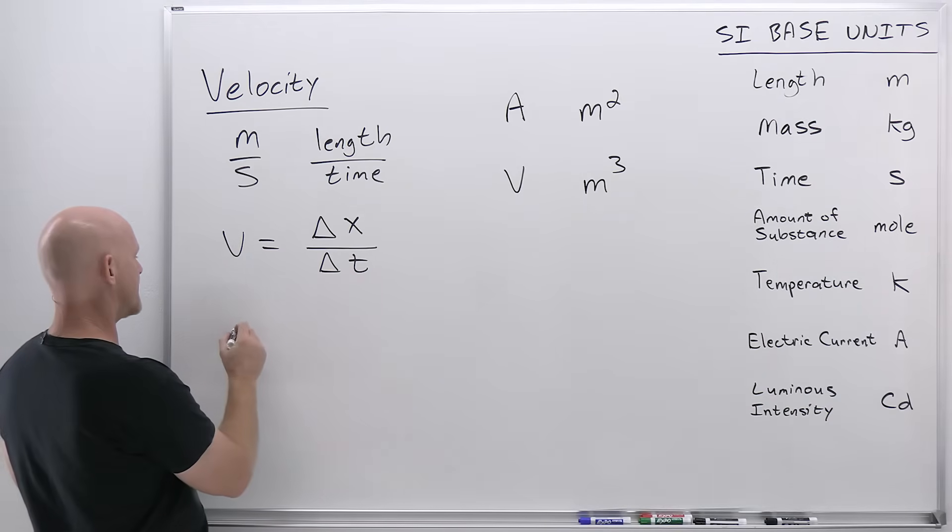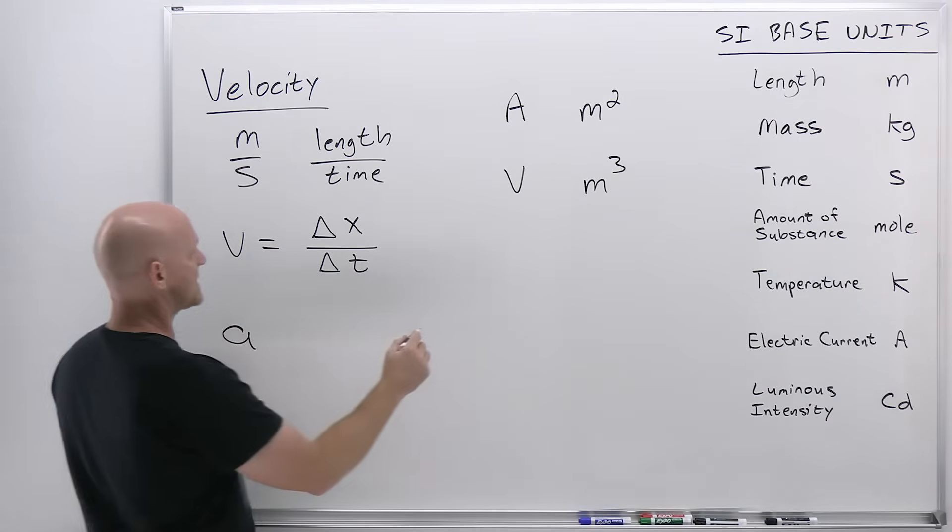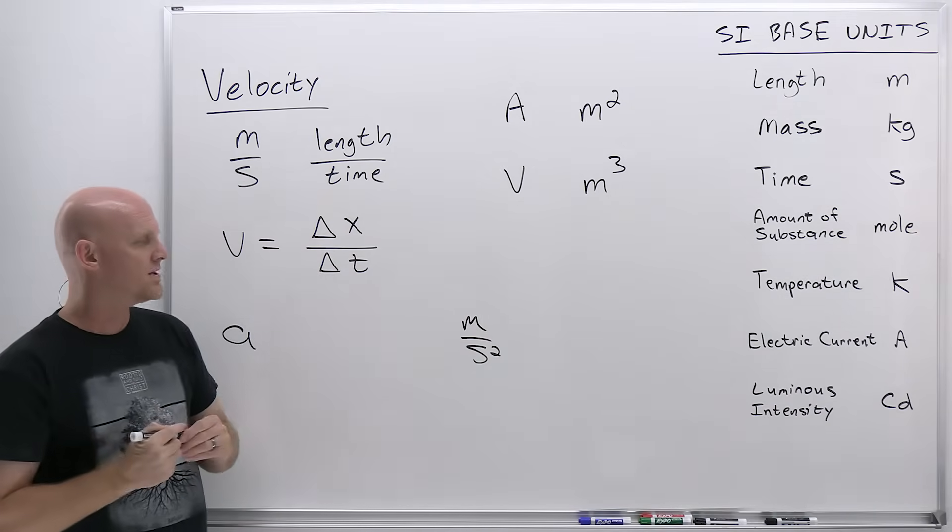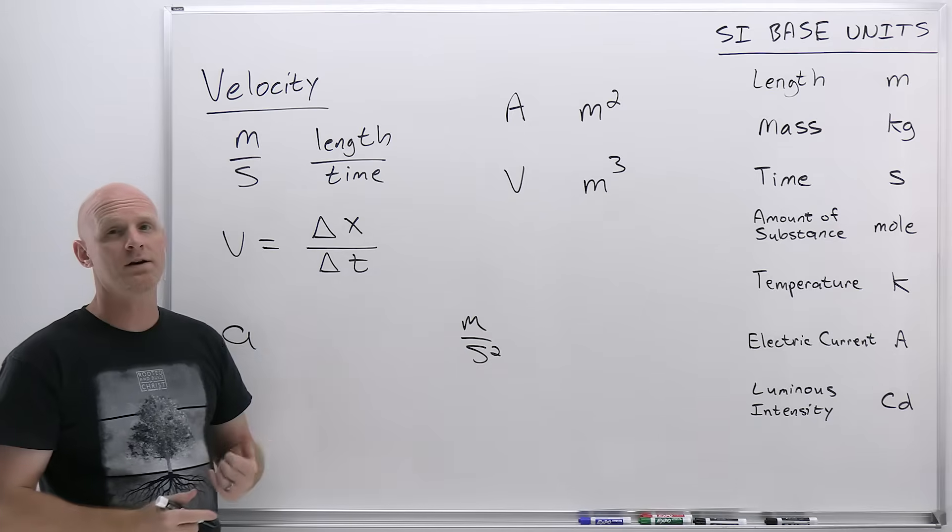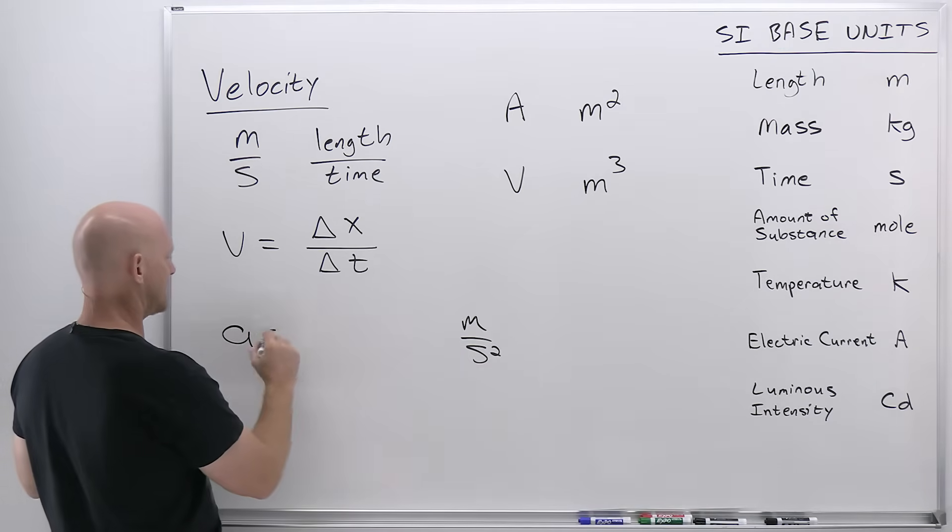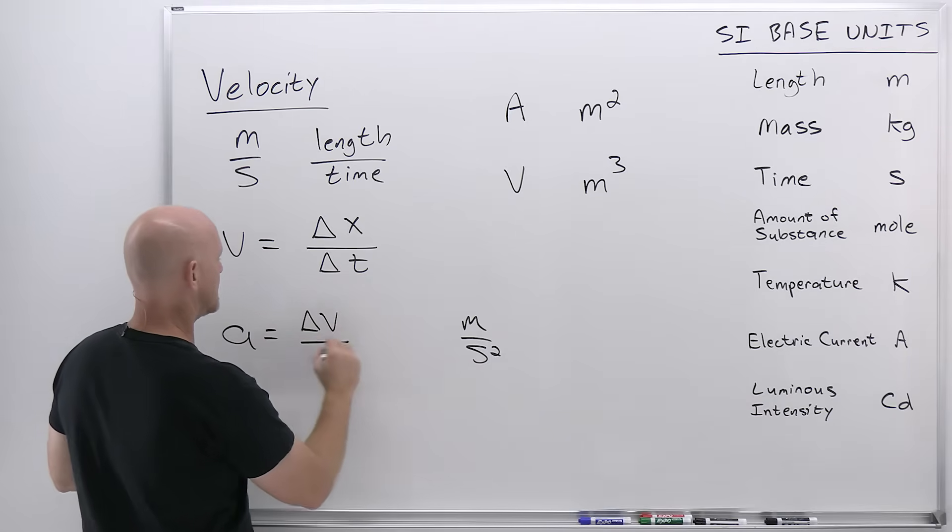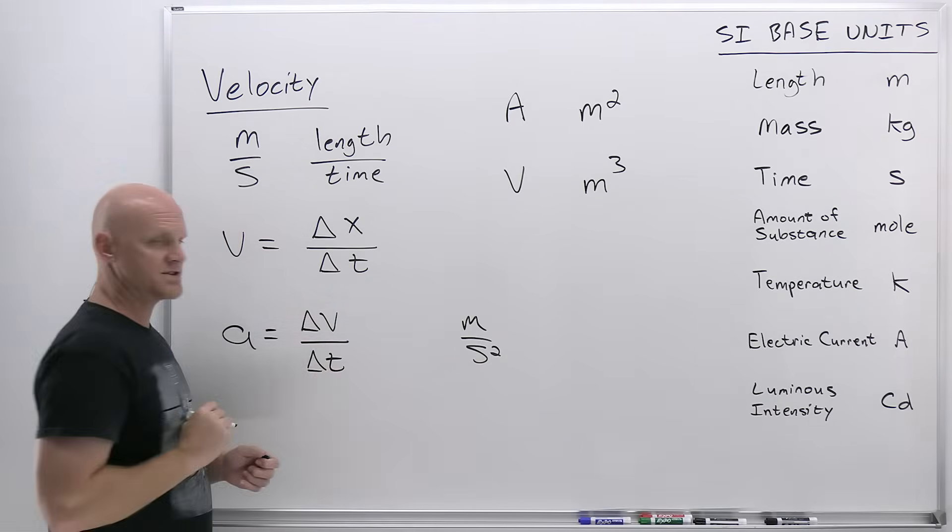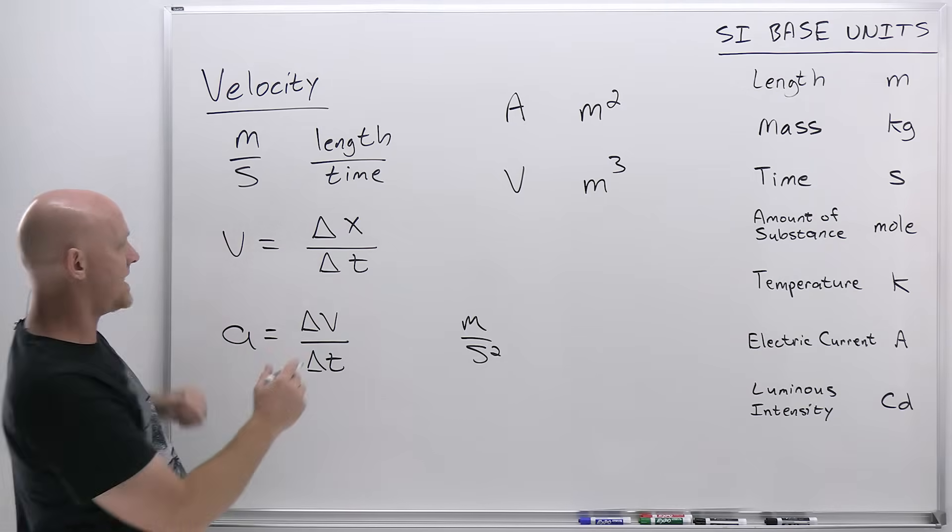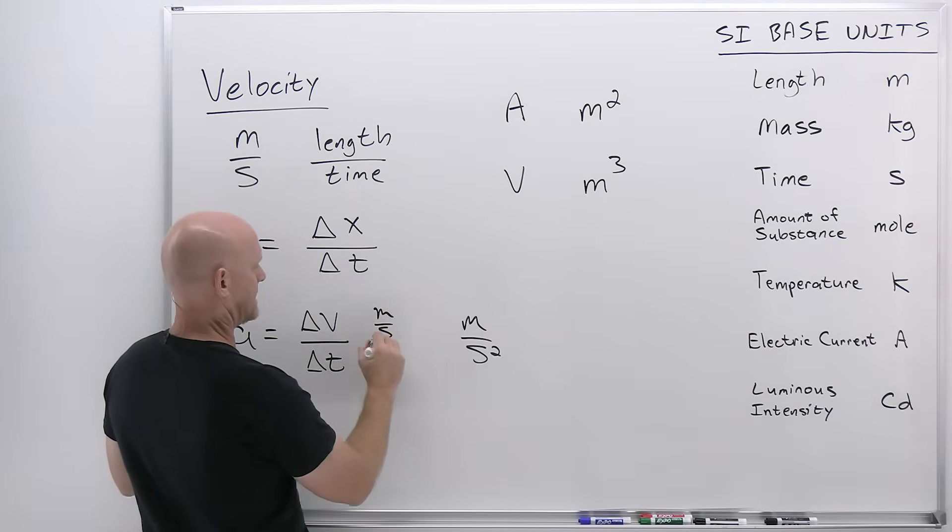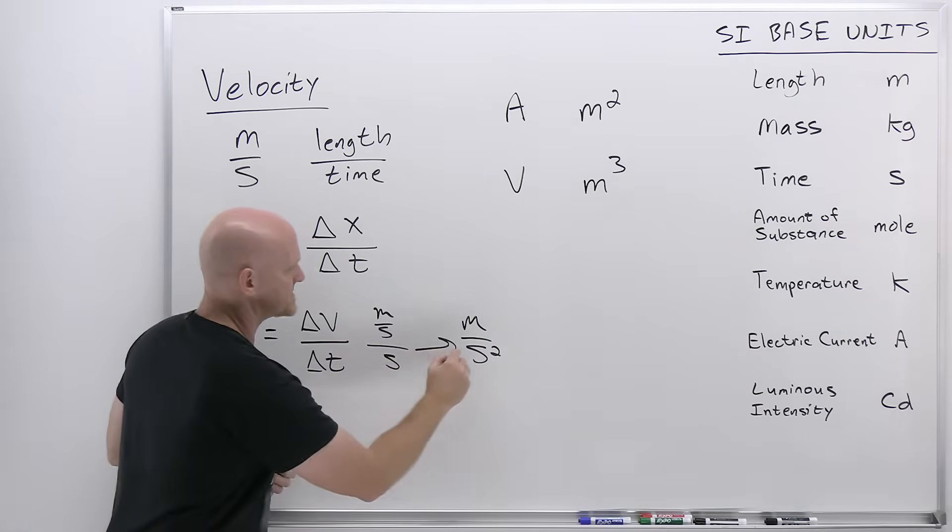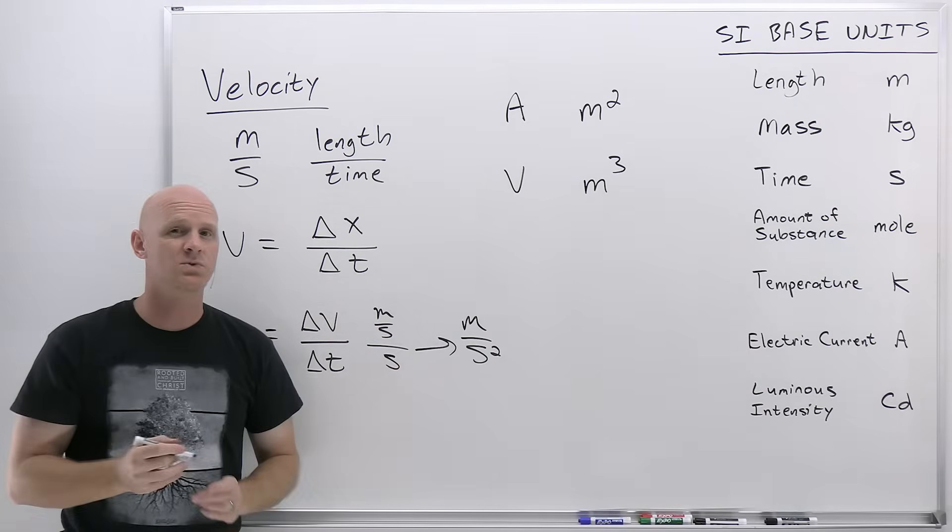Let's do one more here and talk about acceleration. Acceleration has units of meters per second squared. You might look at this as length over time squared. But you also, it turns out, could have looked at it as the change in velocity over the change in time. And velocity, we already determined, was going to be meters per second. And then time, second as well. And you put those together and it becomes meters per second squared.